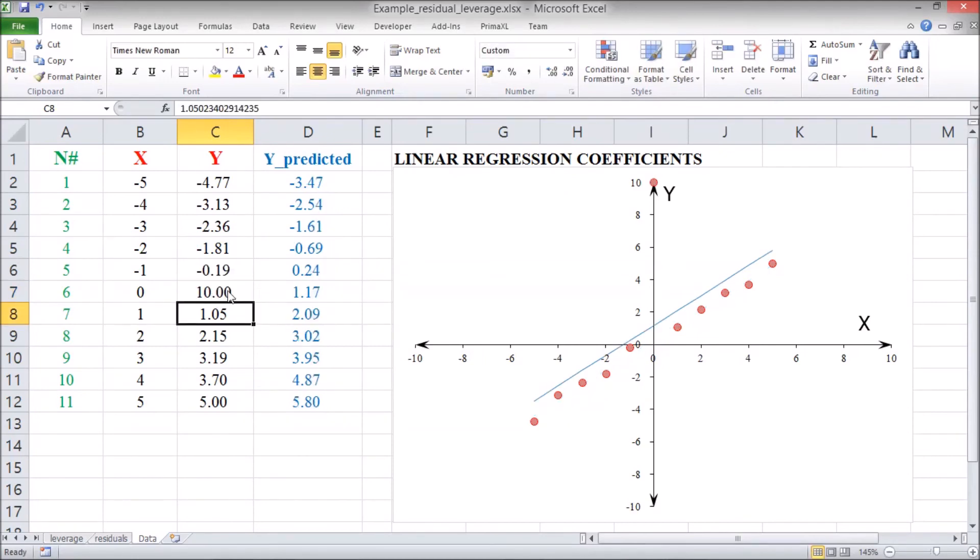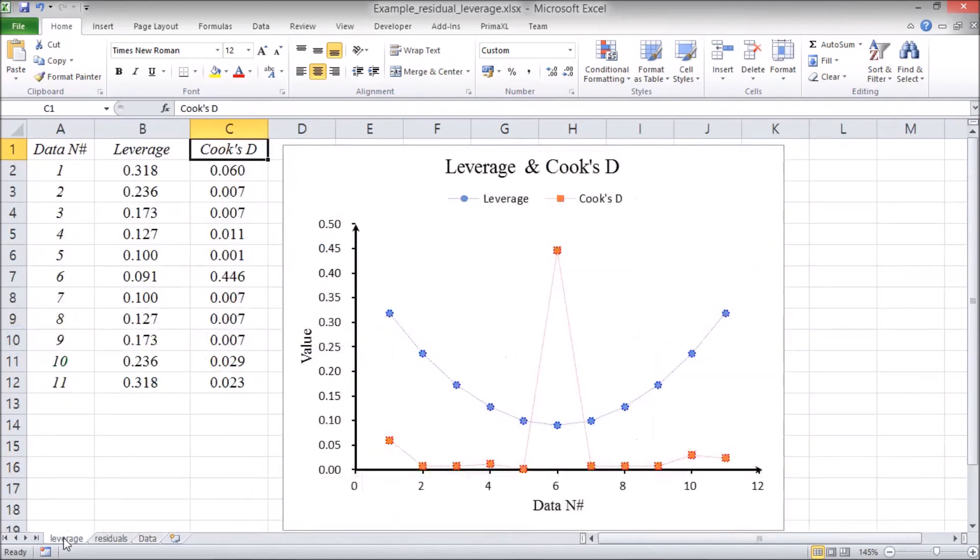The Cook's distance has increased, but the leverage remains the same. So, a change at the low leverage position has more subdued effect on the regression result.